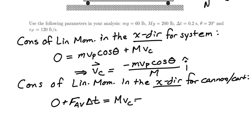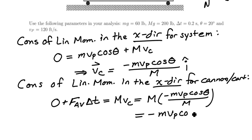Now we just found vc to be quantity minus m vp times the cosine of the angle theta, divided by capital M, which of course will simply give me minus m vp times the cosine of the angle theta.